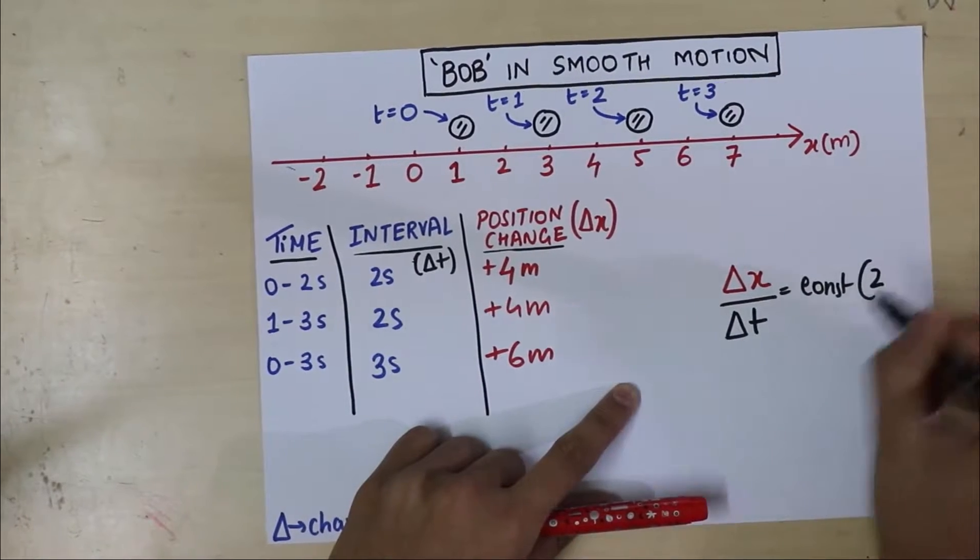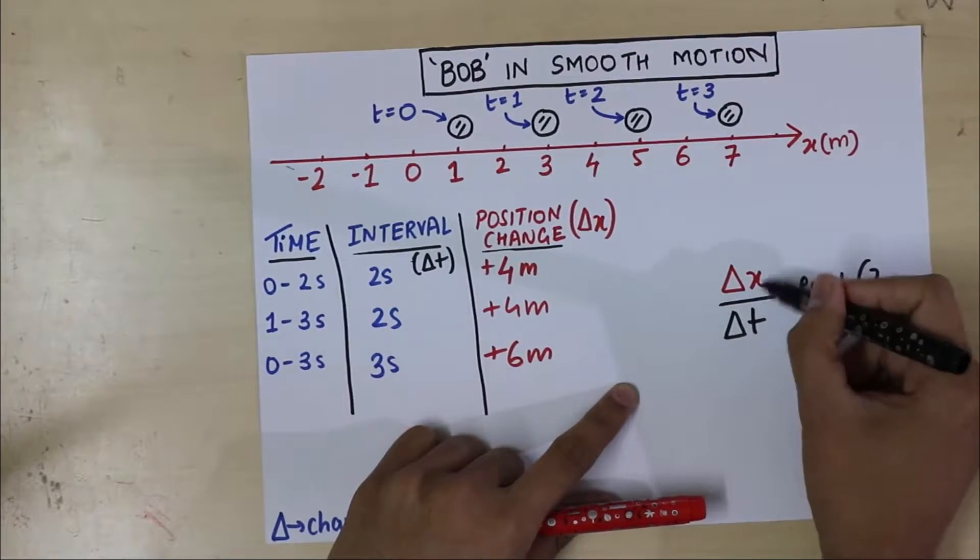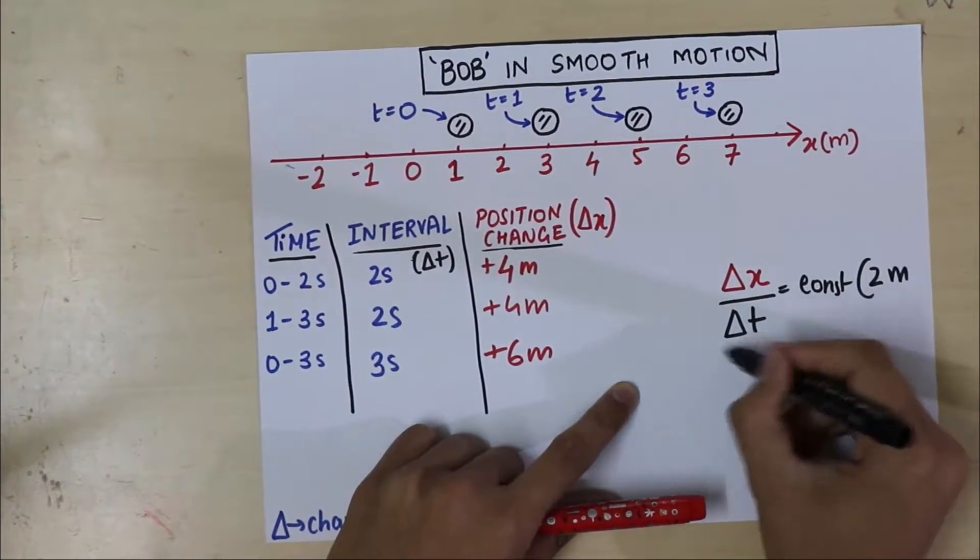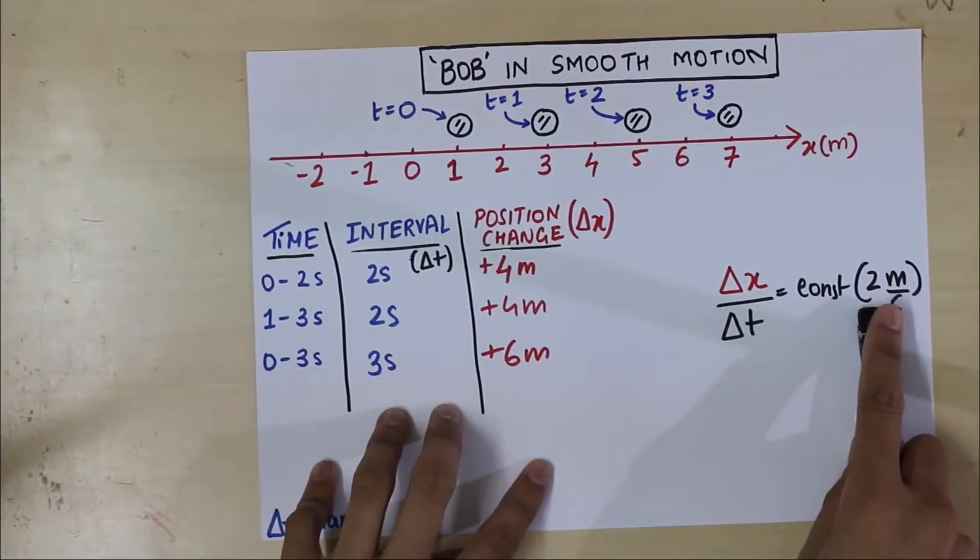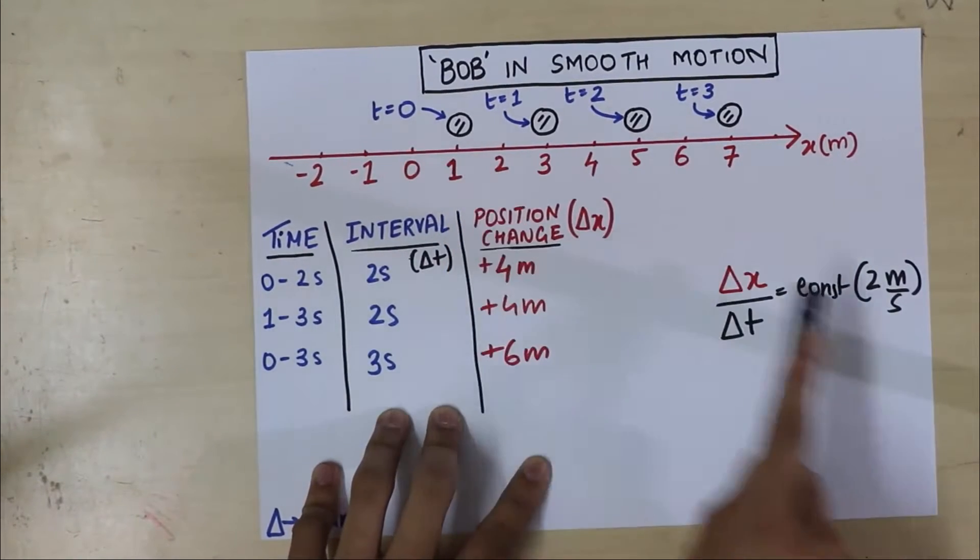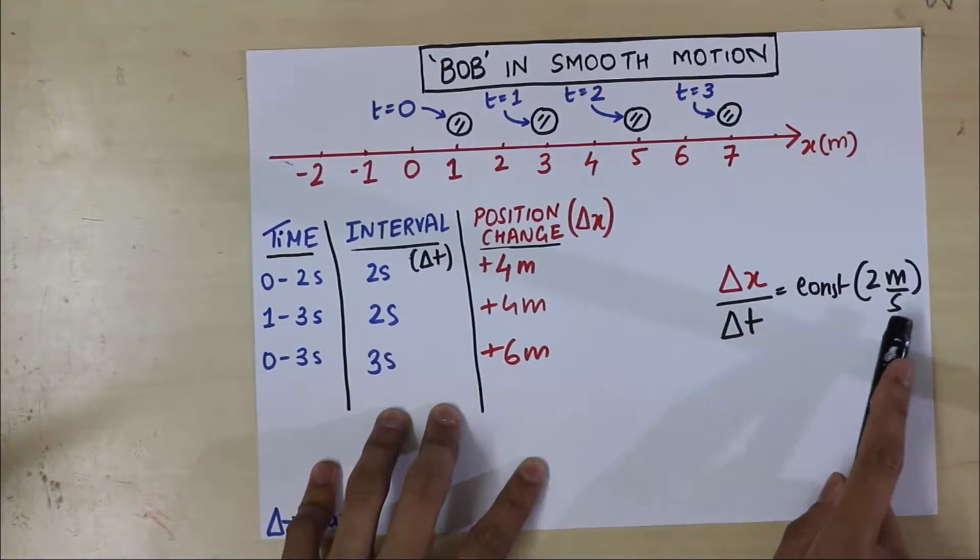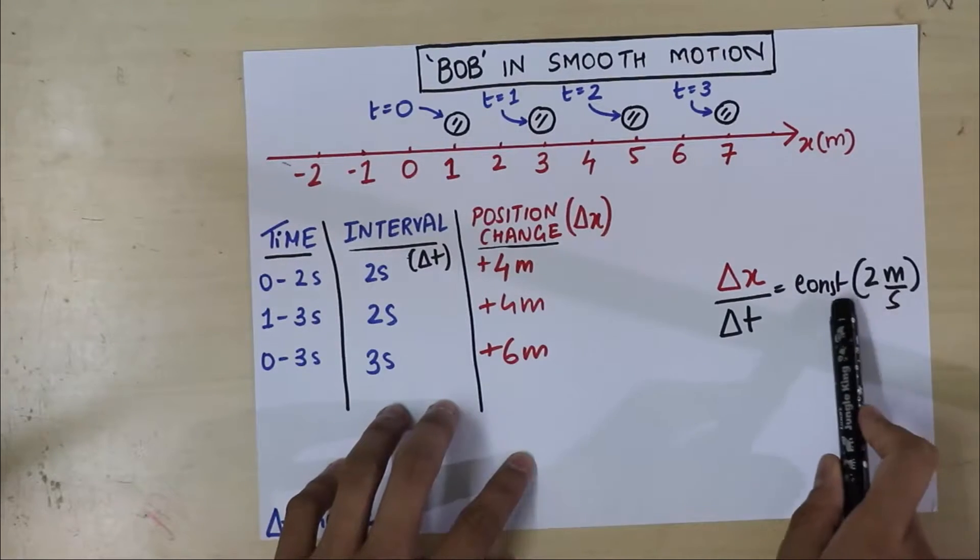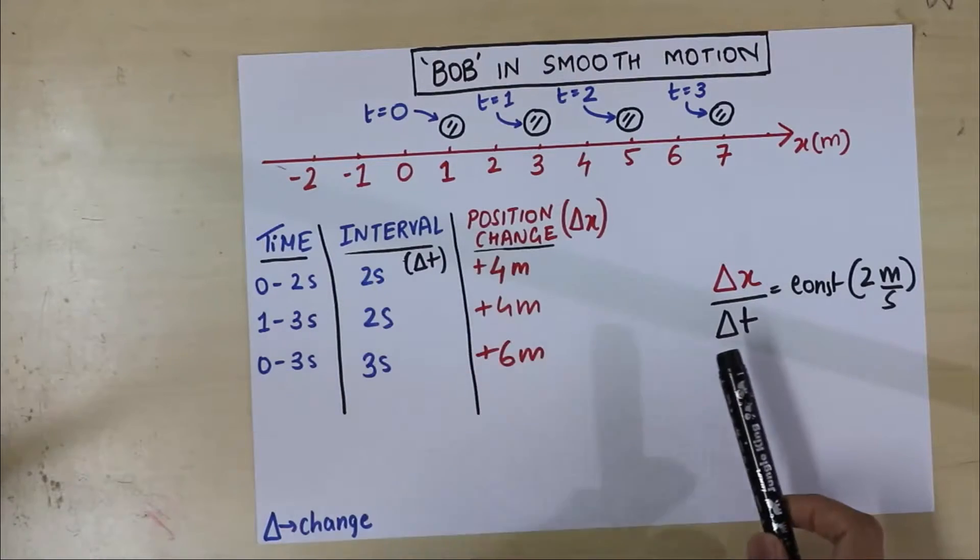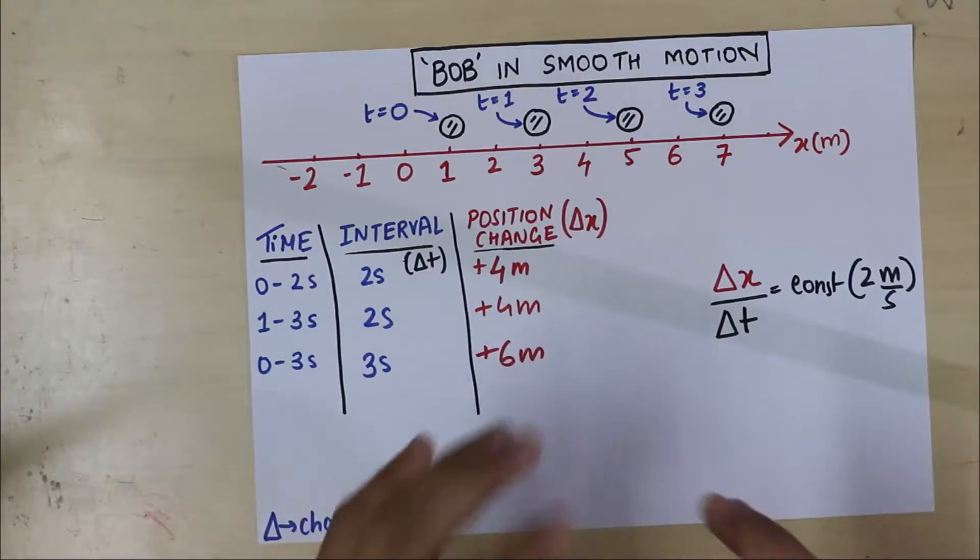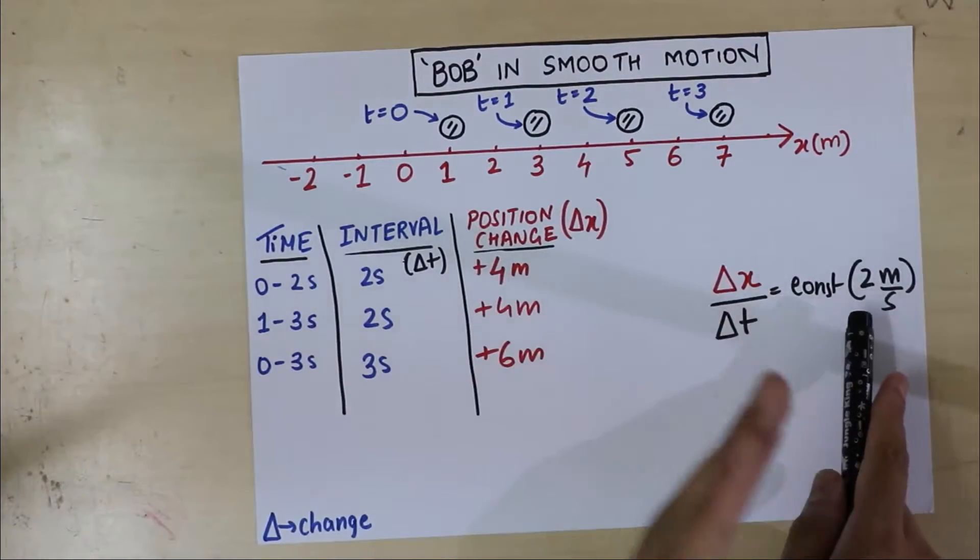This is the time it takes for the change of position. Divided by delta t is a constant. And in our case, it is 2. And let's see. Does this constant have a unit? Yes, it does. You see, changes in position is given by meters. And time is given by seconds. So it's a 2 meter per second. What this constant is telling is that Bob, in this example, is moving, or is changing its position by 2 meters for every single second. In fact, that's what is smooth.